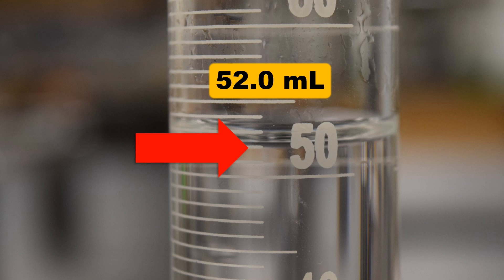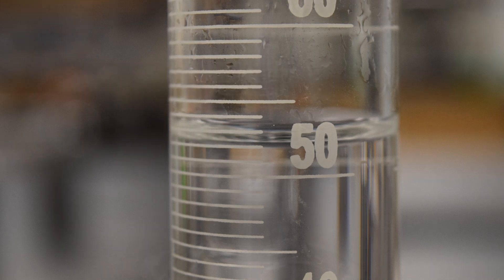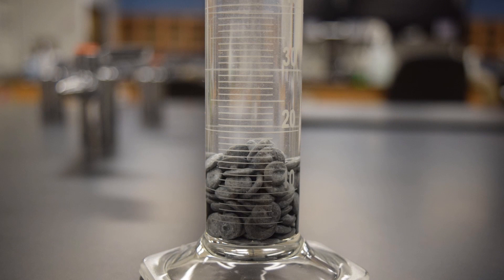Measure the initial volume of water present, then add the insoluble metal pellets. We'll utilize the Archimedes principle, which states that the metal pellets will not dissolve in water, and thus, when placed in water, will displace a volume equal to its own volume.